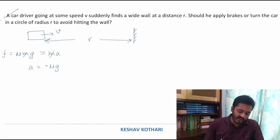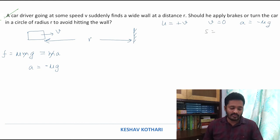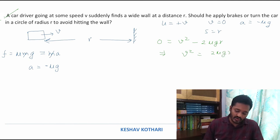Initial velocity is v, final velocity is 0, acceleration is -μg, and displacement is r. Using the equation V² = U² + 2AS, we get 0 = V² - 2μgr, so V² = 2μgr. I will leave this expression.